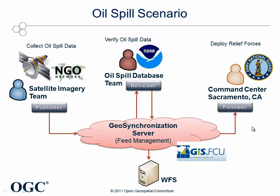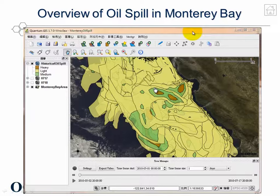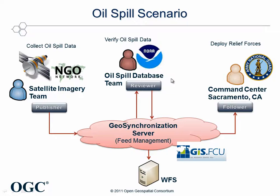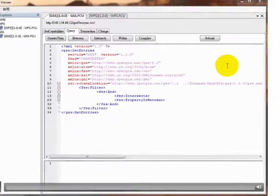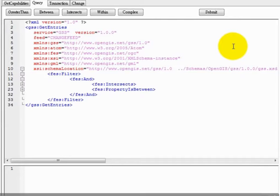OWS 7 successfully established a framework of geosynchronization. In OWS 8, we go further to implement special temporal queries for users to assess the data within a specific time slice or interval as well as within a certain boundary area. When the reviewer of NOAA receives the change request, he or she may want to check if the request already exists in the change feed. Meanwhile, it's better to check if the position and size of the oil spill to be inserted is reasonable. The following video demonstrates a simple case for reviewers to verify the change request using special temporal queries.